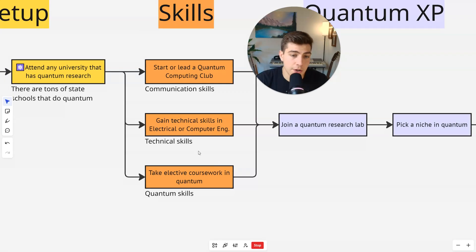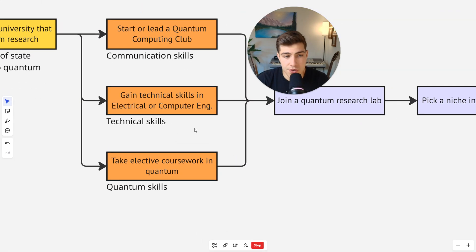Okay, the next thing, and this is arguably the most important thing, is gaining technical skills in electrical and computer engineering. And these are the technical skills that are actually going to make you useful as a quantum engineer. So part of this is just taking your courses, but another part is figuring out exactly what you like to do and how that applies to quantum computing.